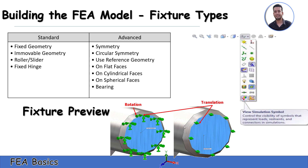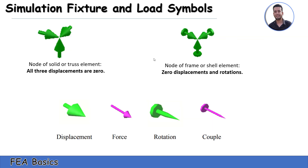That symbol is for translation, and that one is for translation and rotation. If the preview of fixtures is not available, you must check 'View Simulation Symbol' from here. Simulation fixtures have a symbol like a green arrow, which means zero displacement — no movement in translation. If it has an arrow with a circle behind it, it means zero displacement and zero rotation.